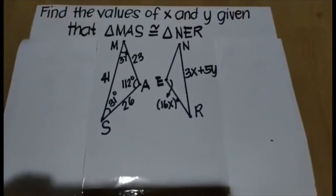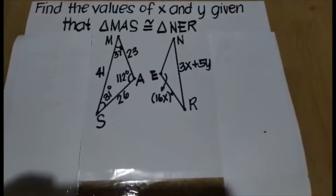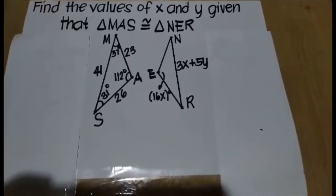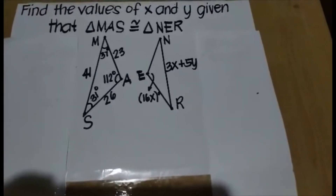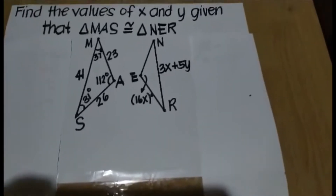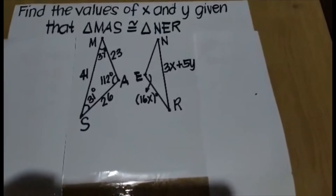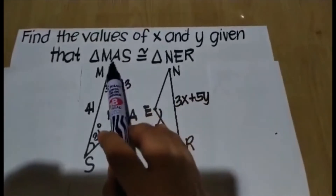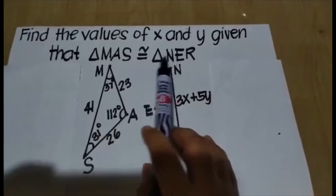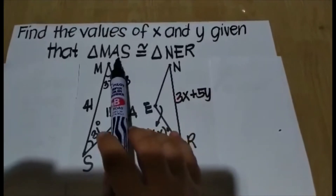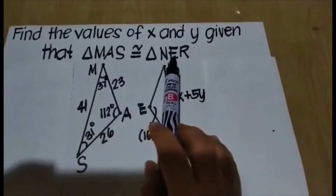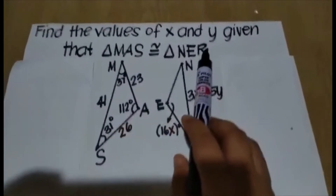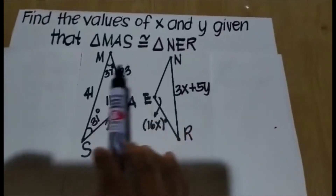Find the values of X and Y given that triangle MAS is congruent to triangle NER. From the given, M corresponds to N, A corresponds to E, S corresponds to R.